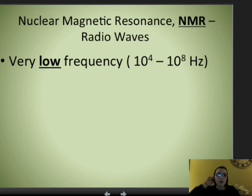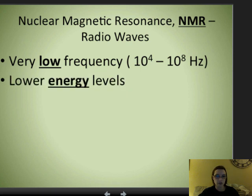NMR uses radio waves. It's a very low frequency, usually 10 to the 4th or 10 to the 8th hertz. So these are very low frequency, and because it's low frequency, it's also lower energy levels.